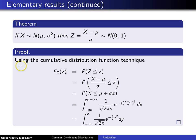The proof of this result will be done by the cumulative distribution function technique. That technique was introduced in chapter 3. So to begin, F sub z of z, the cumulative distribution function of z, is the probability that z is less than or equal to little z. And that is true by the definition of the cumulative distribution function.